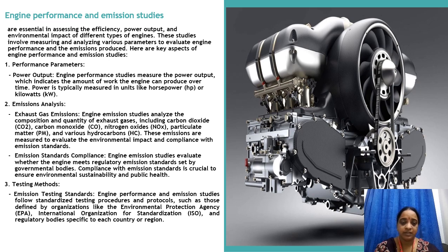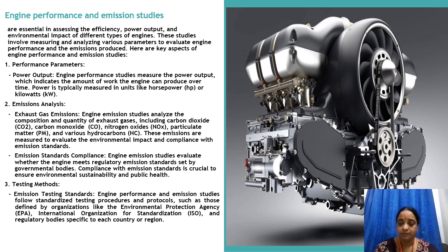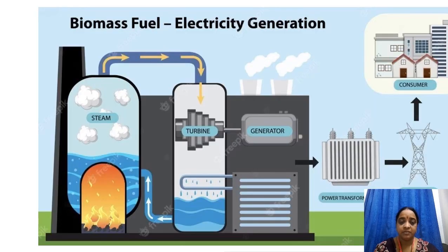This case study covers engine performance and emission studies, examining emissions of various chemicals like CO2, carbon monoxide, nitrogen oxide, hydrocarbons, and particulate matter. The biomass fuel electricity generation process involves steam given to a turbine connected to a generator — a steam turbine process — used in power transformation. Electricity is stored in the grid and delivered to the consumer.